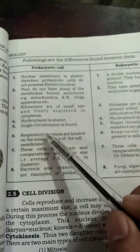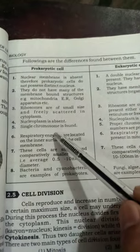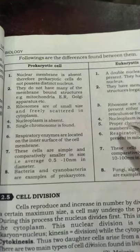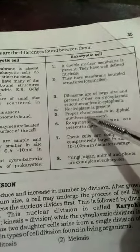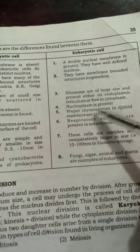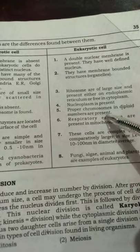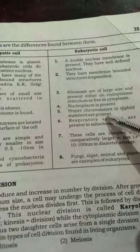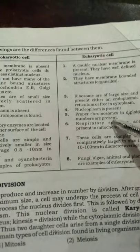Difference number five — chromosomes: a single chromosome is found in prokaryotic cells. In eukaryotic cells, proper chromosomes in diploid number are present.